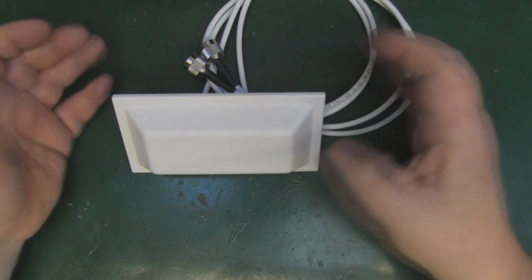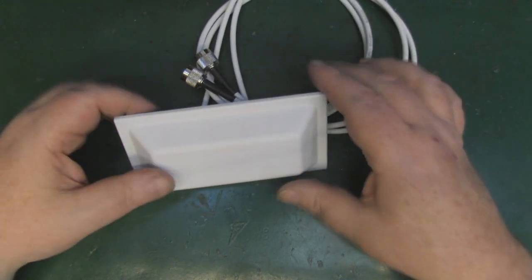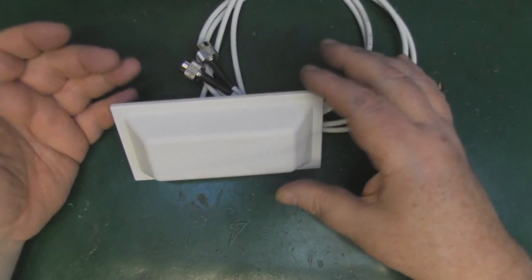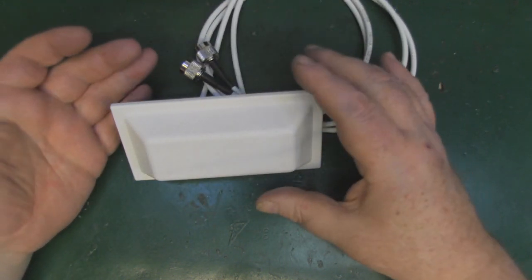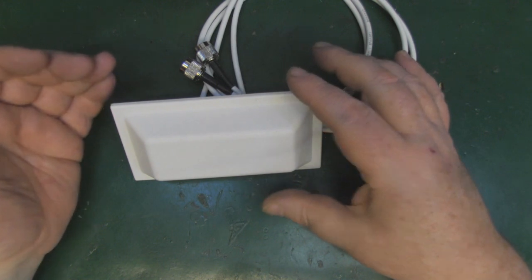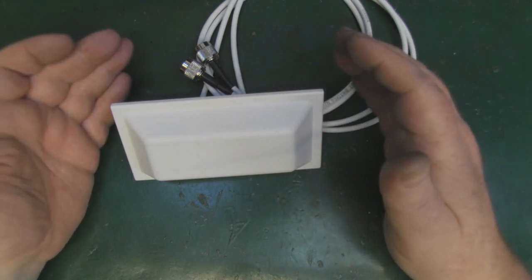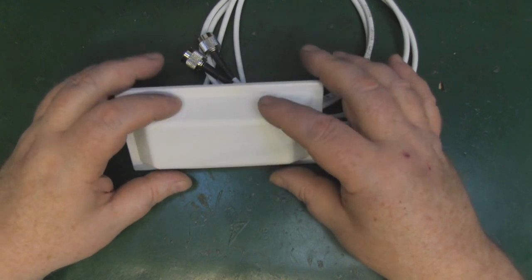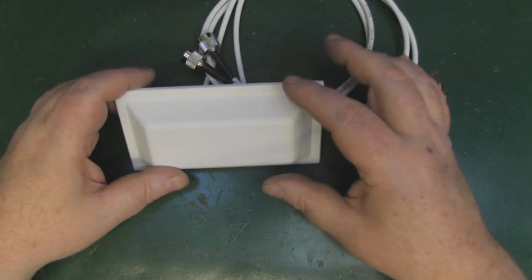As you saw there on the network analyzer, it's got a nice little output there on the 2.4 gigahertz. It's going to work really well on the Wi-Fi spectrum, and you would just expect that with a company like Cisco. This just came in a box - the antenna alone. I picked this up pretty cheap.